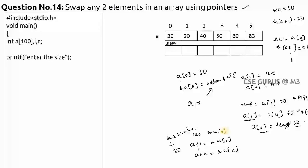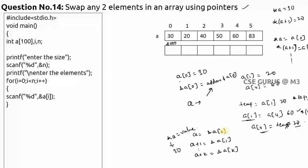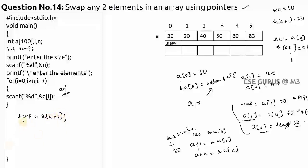In the code, I take an array, enter the size, then enter the elements. Note that &a[i] and a+i are the same thing. To swap a[1] and a[4] using pointers, the code is: temp = *(a+1), then *(a+1) = *(a+4), then *(a+4) = temp.